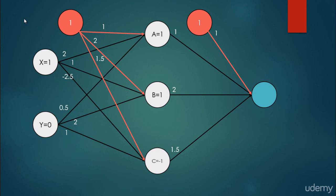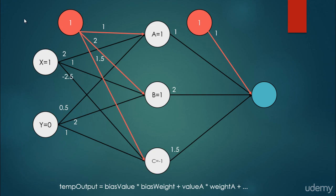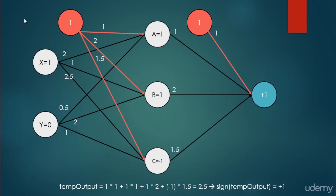We calculate the output in the same manner: bias value times bias weight, plus the value of A times the weight from A to the output, and so on. This gives us 2.5. Taking the signum of this temporary output variable yields +1. So this is how a neural network works in practice.